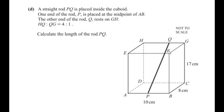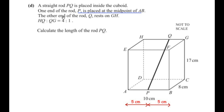A straight rod PQ is placed inside the cuboid. One end P is at the midpoint of AB, and the other end Q rests on GH such that HQ:QG = 4:1. Since P is the midpoint of AB (length 10 cm), the distance from A to P and P to B is 5 centimeters each. Q divides GH so that HQ is 4 out of 5 parts and QG is 1 out of 5 parts.